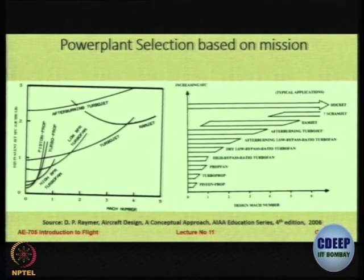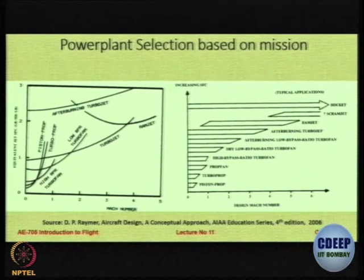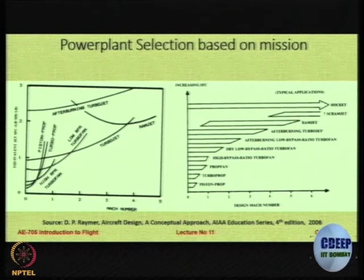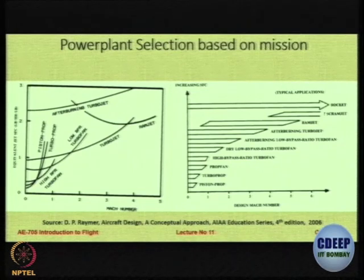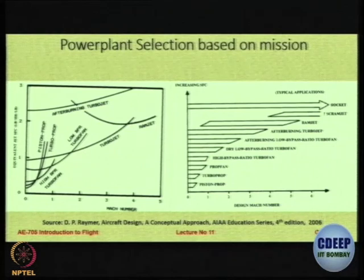This is another graphic that tells you which Mach number ranges a particular power plant type is generally recommended for — there are bands. If you are designing an aircraft and have to select a power plant, just look at the Mach number operating regime and choose a power plant applicable within that range. For example, if your Mach number ranges from 3 to 4, there is no way you can use a piston prop, turboprop, prop fan, or high-bypass turbofan. At Mach 3 to 4, it can only be an afterburning turbojet or a ramjet. This graphic, taken from the seminal book by Daniel Raymer, gives us an idea of which ranges are suitable for which power plant.